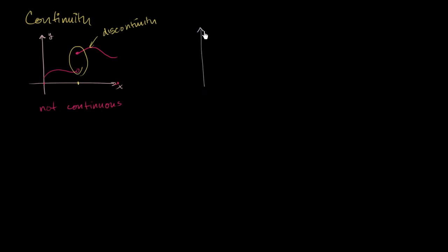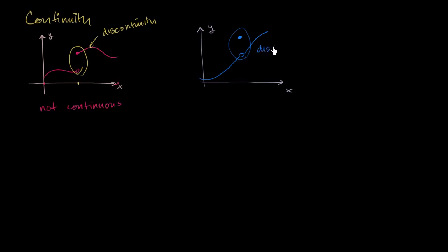Similarly, if you were to look at a function that looked like — let me draw another one — with y and x axes. And let's say the function looks something like this, maybe right over here, and then the function is defined to be this point right over there. Is the function continuous over the interval depicted? And you would immediately say no, it isn't. Because right over at this point the function goes up to this point just like this. And this kind of discontinuity is called a removable discontinuity.